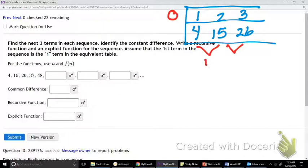So 15 minus 4 is 11. 11 is the common difference. So I can say 48 plus 11 is 59, 59 plus 11 is 70, 70 plus 11 is 81. The common difference is 11. If it was getting smaller, I'd put a negative.